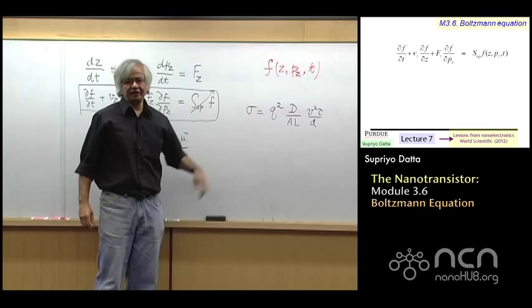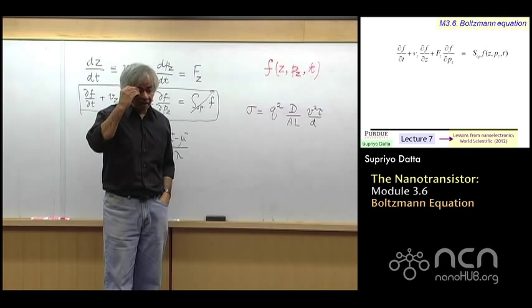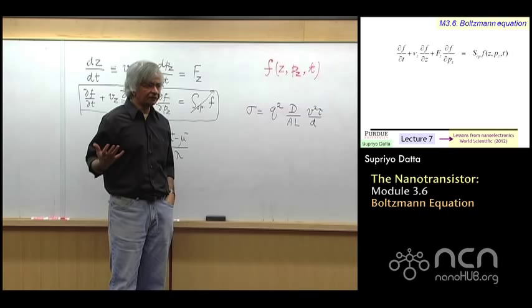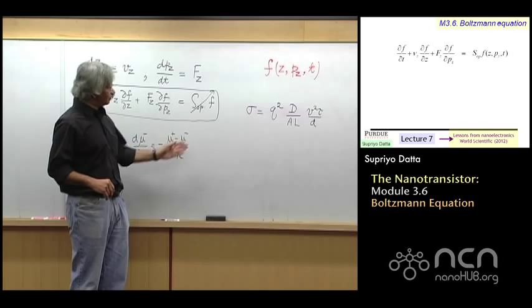And, again, the standard way of getting a result like this would involve starting from Boltzmann equation. In the coming weeks, we'll talk about the flow of spins. We'll talk about thermoelectricity. That's the flow of how heat is converted to electricity. And all of that usually would require you, again, to start from Boltzmann equation.